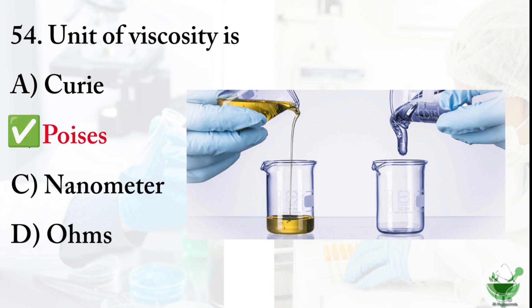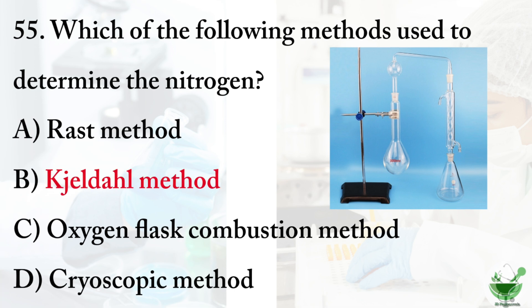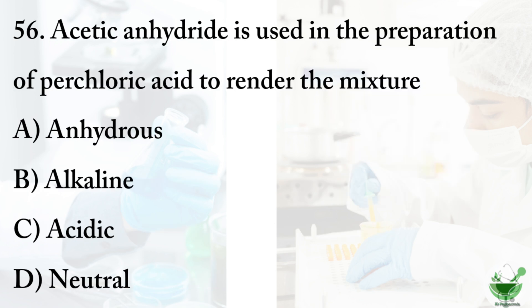The correct option is option B, Poises. Question number 55: Which of the following methods is used to determine nitrogen? Option A, Rost method; option B, Kjeldahl method; option C, Oxygen flask combustion method; option D, Cryoscopic method. The correct option is option B, Kjeldahl method.